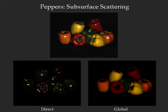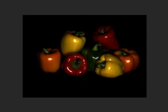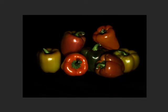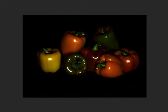The peppers in this example show the effects of subsurface scattering. While the direct component mainly includes the specular reflections from the pepper surfaces, the colors of the peppers arise from the subsurface effects as seen in the global image. The colors of the peppers can be changed in the global image and the direct image with the highlights added back to obtain realistic novel images where the peppers have new colors.